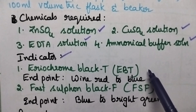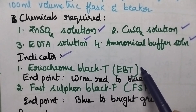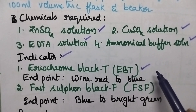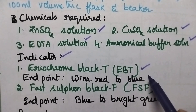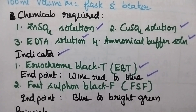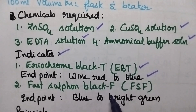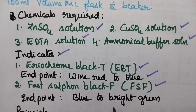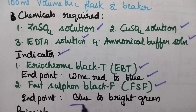The first indicator is Eriochrome Black T (EBT), which is used in the first step where the endpoint involves the color change from wine red to blue. In the second step, Fast Sulphone Black F is used and at the endpoint the color change is from blue to bright green.